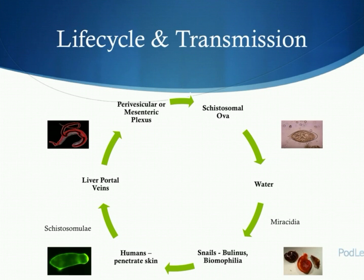While in the portal veins, they mature into adolescent worms, or schistosomulae. The schistosomulae then travel to either the perivesicular plexus, if they are urinary or haematobium, or into the mesenteric plexus if they're mansoni or intestinal. While in these plexi, the adult worms live in permanent copulation and can create anywhere between 20 to 300 ova a day. The ova either end up being deposited within tissues or are flushed out through urine or stool, and if poor sanitation abides, the ova are washed back into water sources, completing and continuing the life cycle.